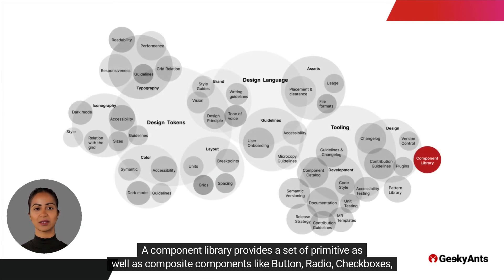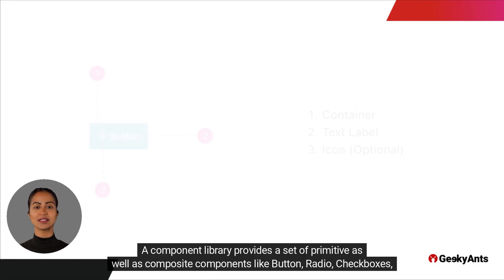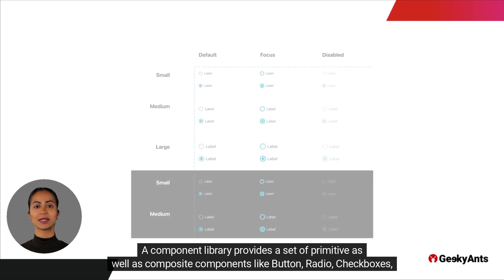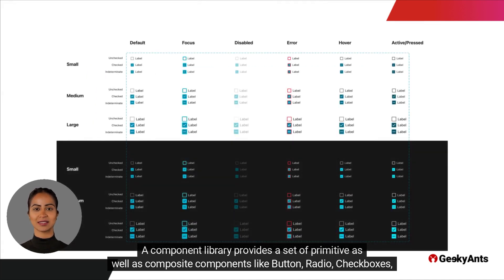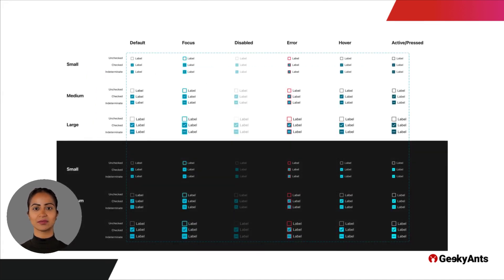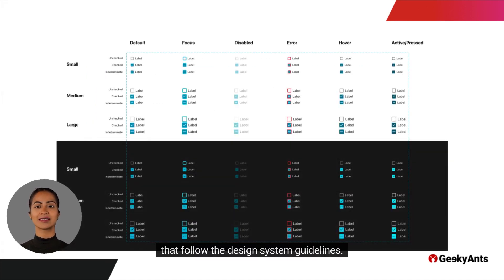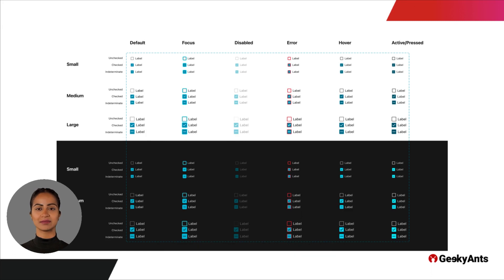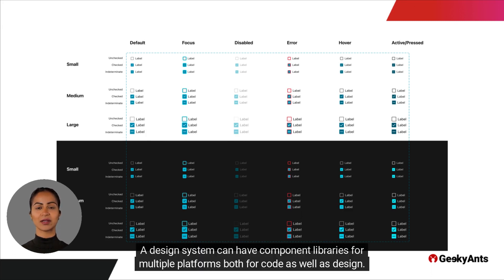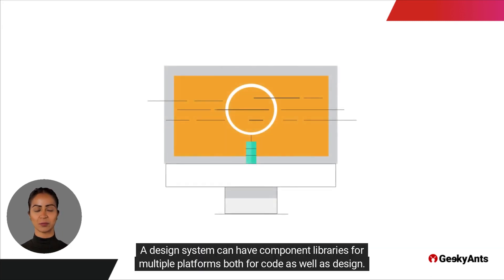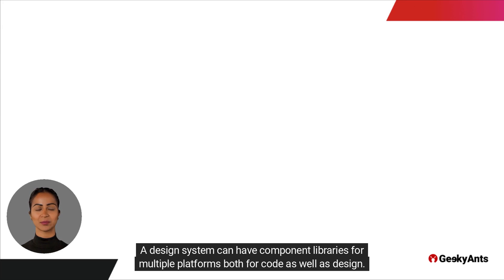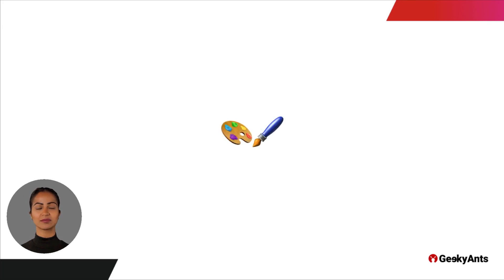A component library provides a set of primitive as well as composite components like button, radio, checkboxes, etc., that follow the design system guidelines. A design system can have component libraries for multiple platforms, both for code as well as design.